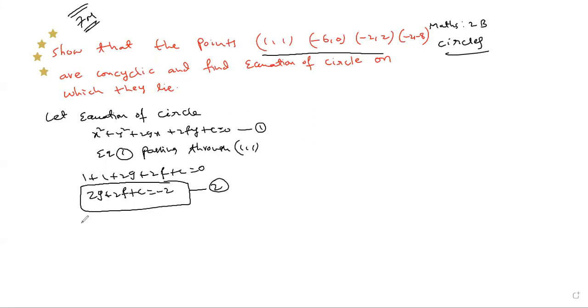Again, equation 1 passes through (-6,0). Substituting x = -6 gives 36, y = 0. This becomes -12g + c = -36, equation number 3.